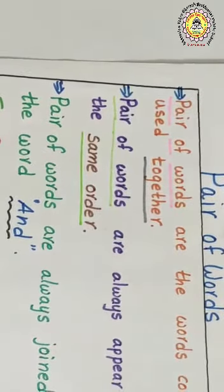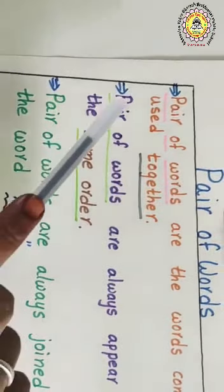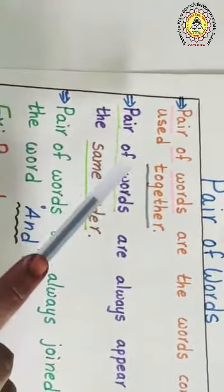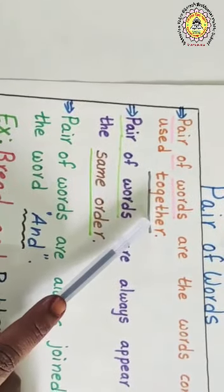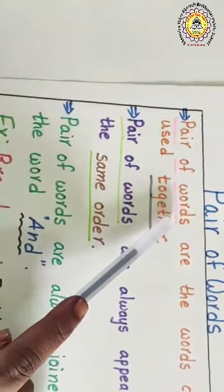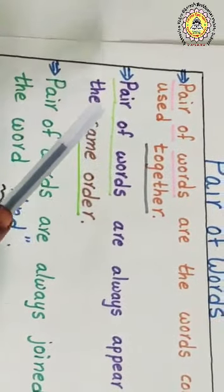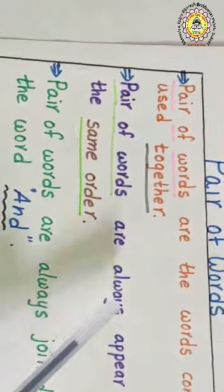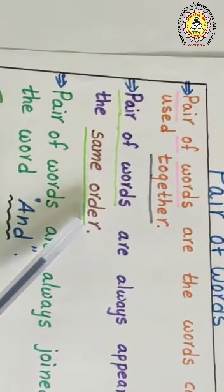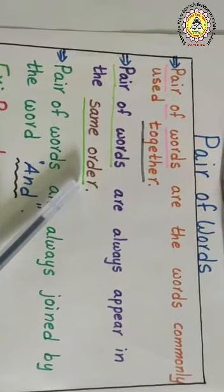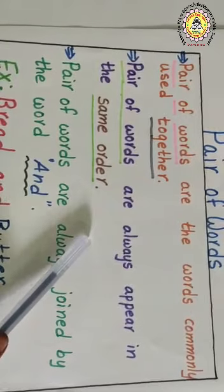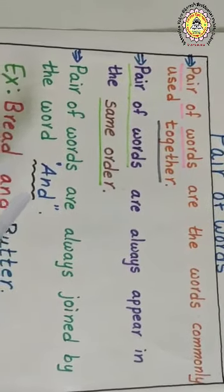Let us see some points about pair of words. First, pair of words are the words commonly used together. We use those words together — such type of words are called pair of words. Second point: pair of words always appear in the same order. For example, shoes and socks — we say it in the same particular order only. We don't call it as socks and shoes.